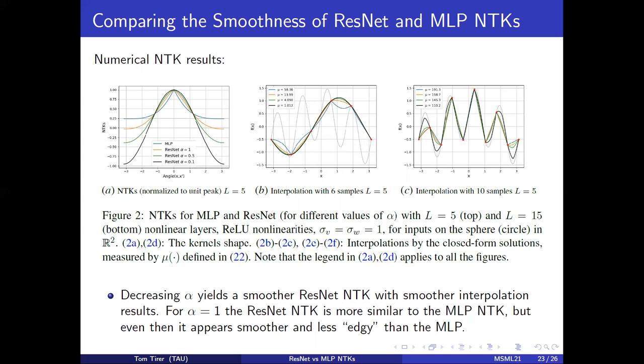You can see that decreasing alpha yields a smoother ResNet NTK with smoother interpolation results. For alpha equals one, the ResNet NTK is more similar to the MLP NTK, but even then it appears smoother, and the quantitative measure agrees with the visual results.